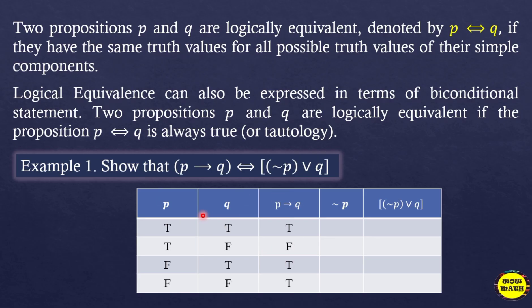Referring back to the previous video lesson, we already discussed the truth table and truth values of the conditional statement. The conditional statement is false only when q is false; the rest are true.